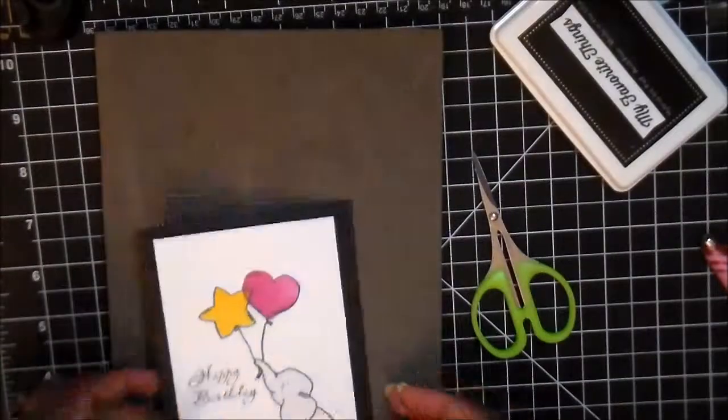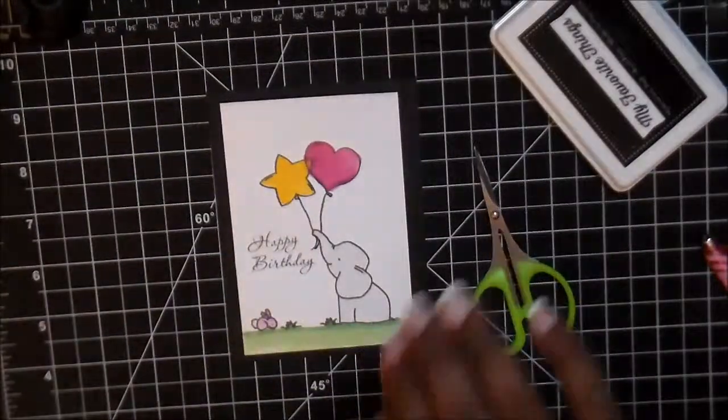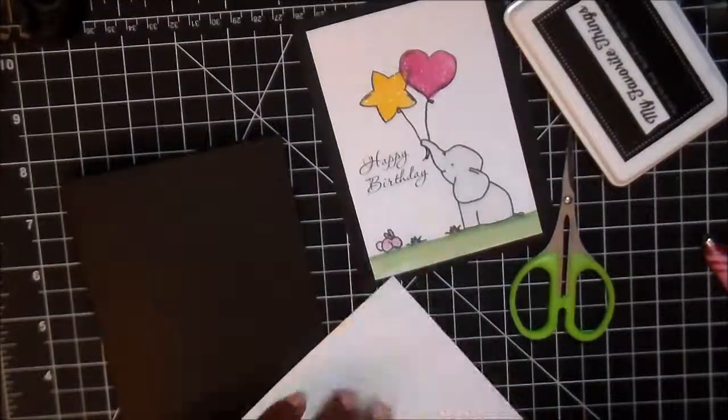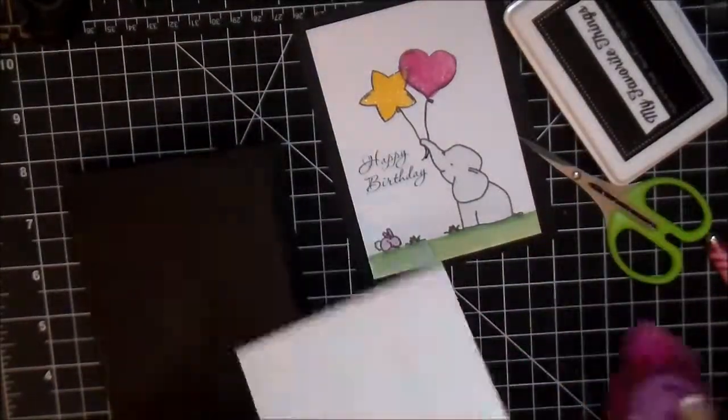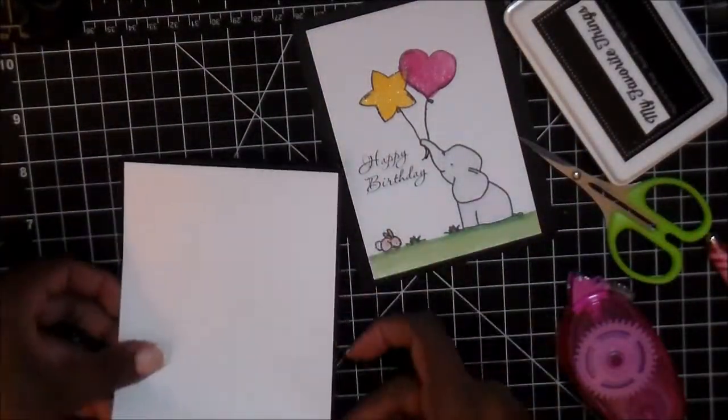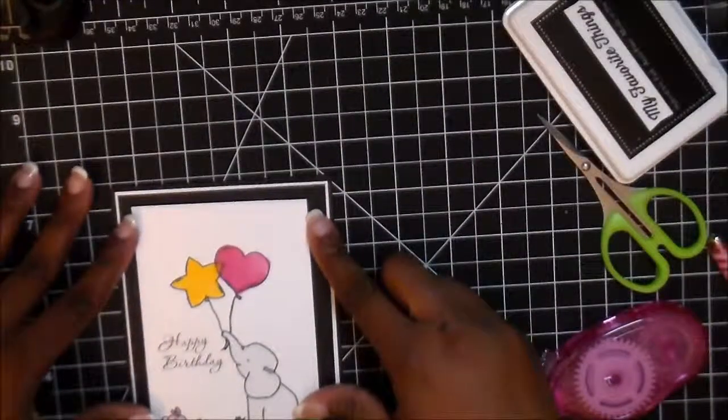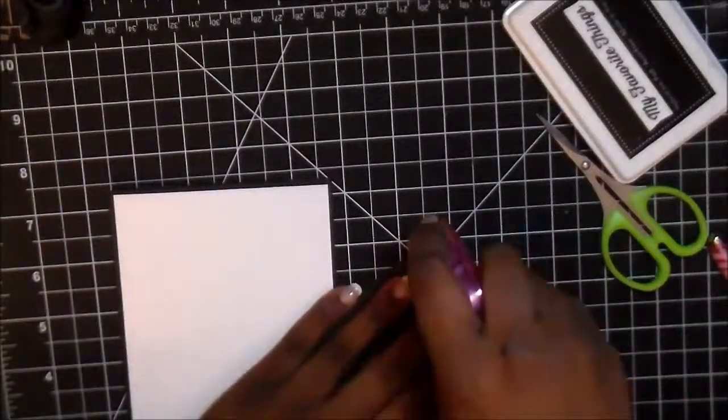And for a little dimension I just put some dimensionals on my focal point and then I mounted it on a black piece of paper and now I'm just finishing putting the card together and even after the initial oops that I made I think it still came together pretty well.